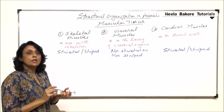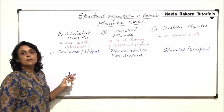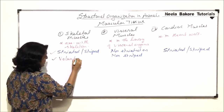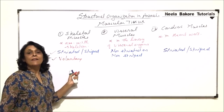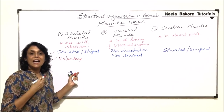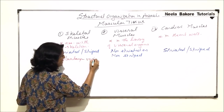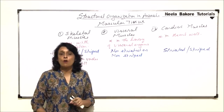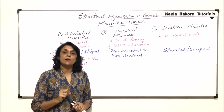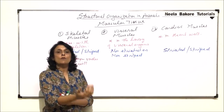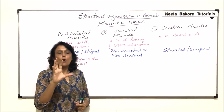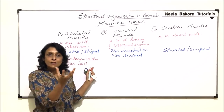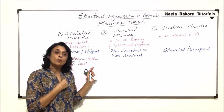Skeletal muscles are also called voluntary muscles. Their functioning is under our control — under our will. Whenever we want these muscles to contract, that is when they contract. For example, when we want to move our arm, fold our arm, or move our fingers, the muscles are under our control and contract only when we want them to.